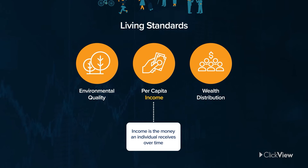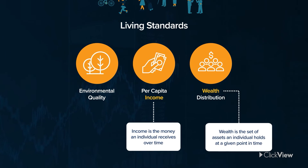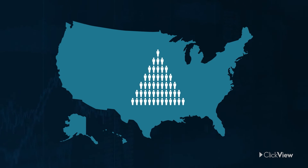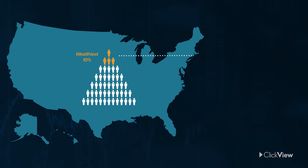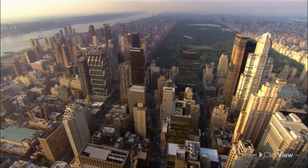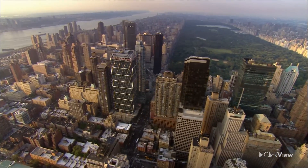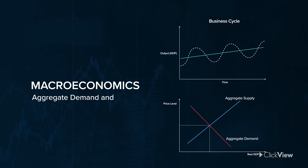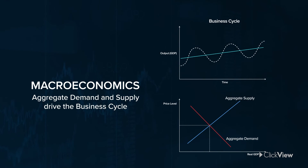Income is the money an individual receives over a period of time, while wealth is the set of assets an individual holds at a given point in time. Even in advanced economies, wealth is very unevenly distributed. For example, in the US, the wealthiest 10% of the population own around 80% of the nation's wealth. Economies are complex and are impacted by a wide range of factors. Macroeconomics is about the big picture and how aggregate demand and supply drive the business cycle.